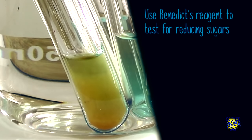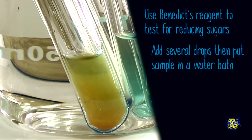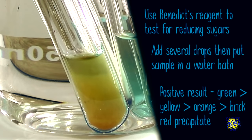So to summarize, we use Benedict's reagent to test for the presence of reducing sugars. Add several drops to your samples and then put them into a water bath. Depending on how much reducing sugar is present it'll first turn green then yellow then orange and it could form a brick red precipitate if there is a lot of sugar present.